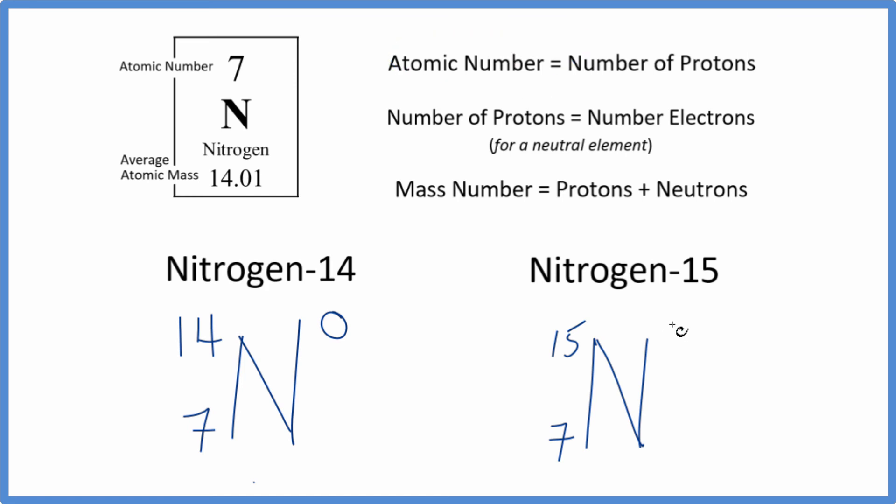You could also put a zero up here to show that it's neutral. It's not always written, but not a bad idea. Finally, we don't need to write the number of neutrons here. We can figure that out. We have the mass number, we have the number of protons, so we can just figure neutrons out.